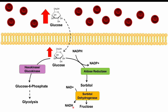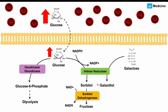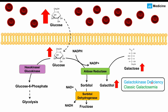Aldose reductase can also act on galactose, a monosaccharide usually ingested as part of the disaccharide lactose. Lactase breaks lactose into glucose and galactose, and aldose reductase can convert galactose into its corresponding sugar alcohol, galactitol. High galactose levels — seen in conditions like galactokinase deficiency, where galactose cannot be converted to galactose-1-phosphate — lead to elevated galactitol via aldose reductase.